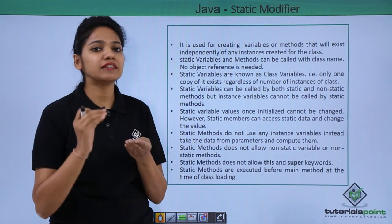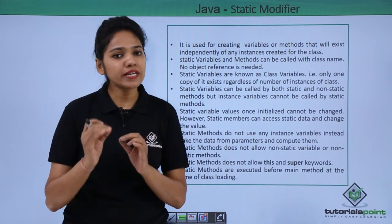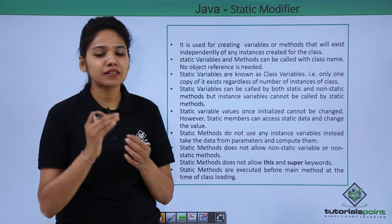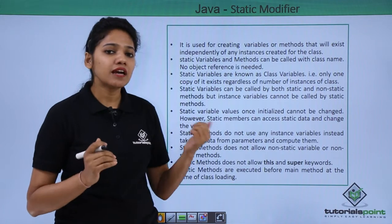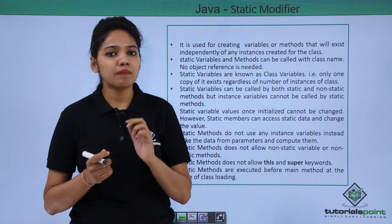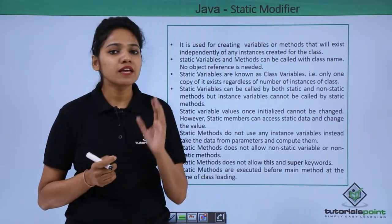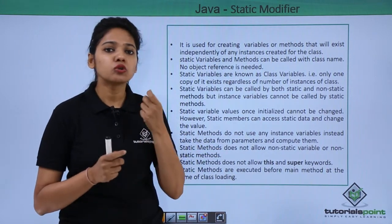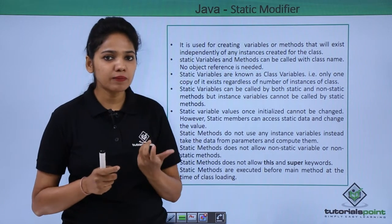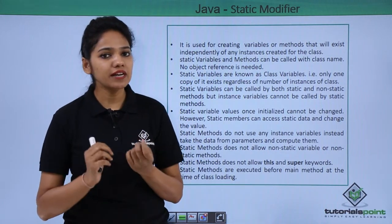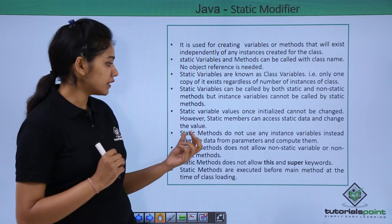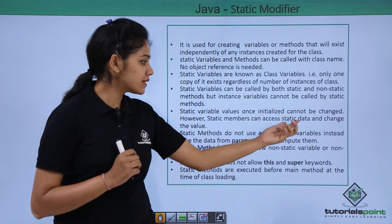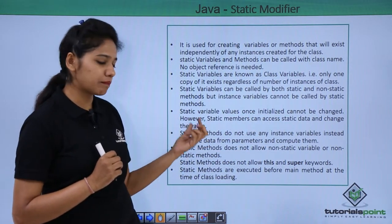To work with values in static methods, you provide parameterized values to these static methods and calculate within them. Another key point is that you cannot use the 'this' or 'super' keywords in static methods. The 'this' keyword refers to a particular variable in the current object, and 'super' is used for parent-child relationships. Also, a static variable once initialized cannot be changed, but can be accessed by static members.